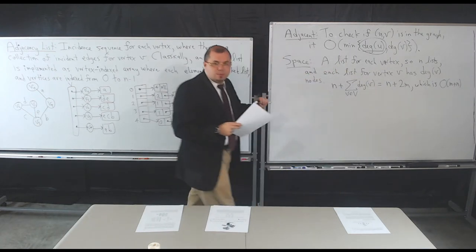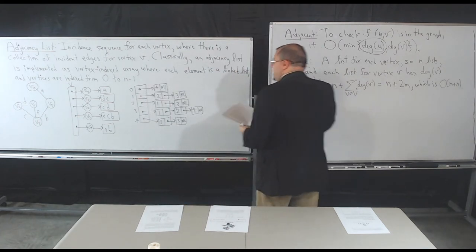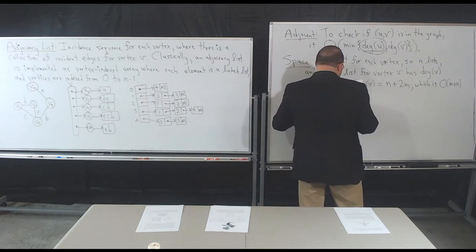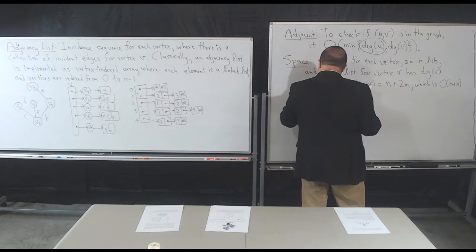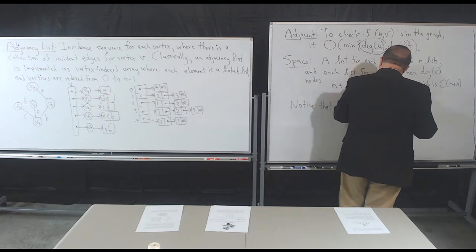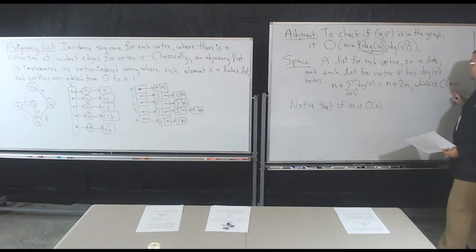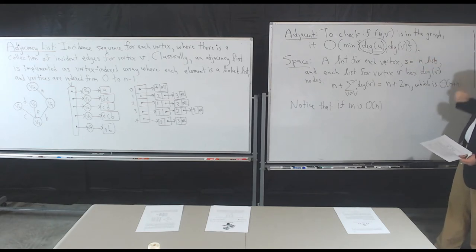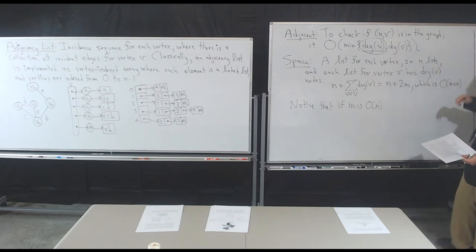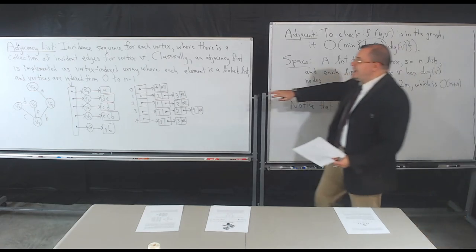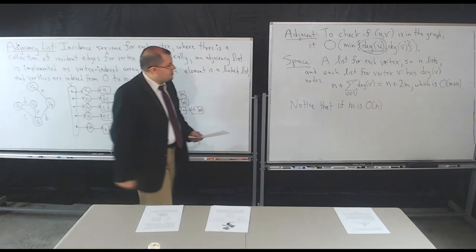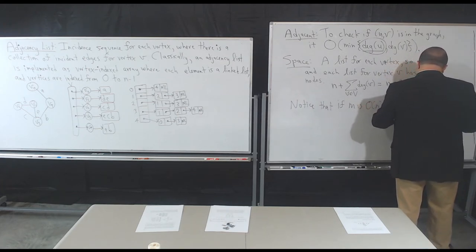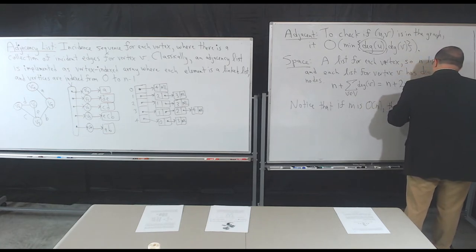One other thing: you might ask why we care about sparse graphs. Believe it or not, sparse graphs occur quite often. Notice that if M is O(N), this space usage becomes O(N), which is quite nice. Lookup times are then not relative to the number of edges but to the number of vertices. So if M is O(N), the adjacency list representation is quite efficient.